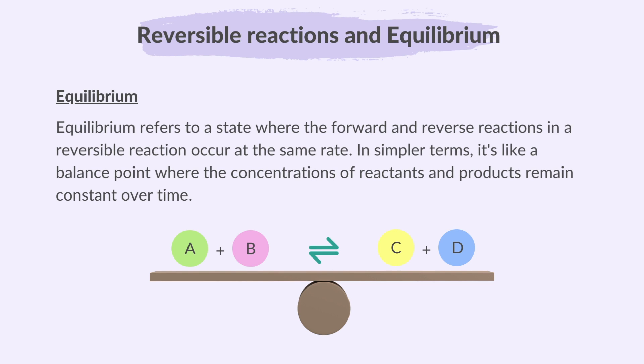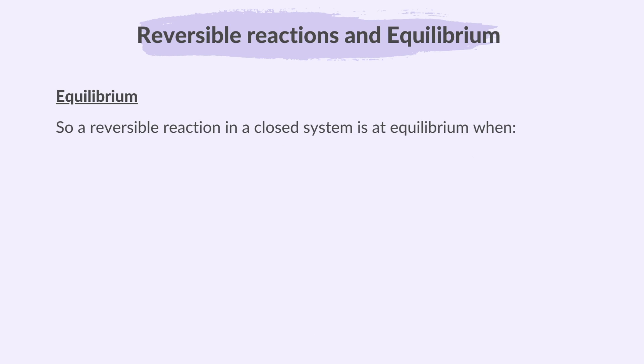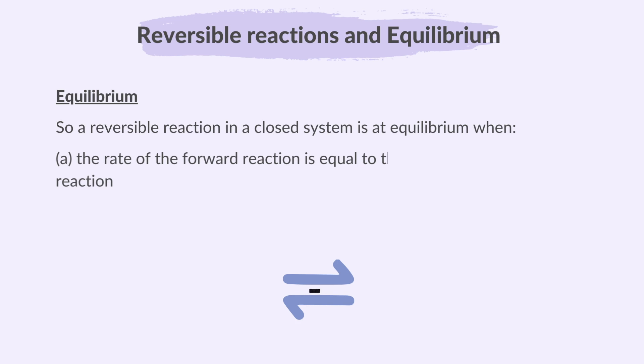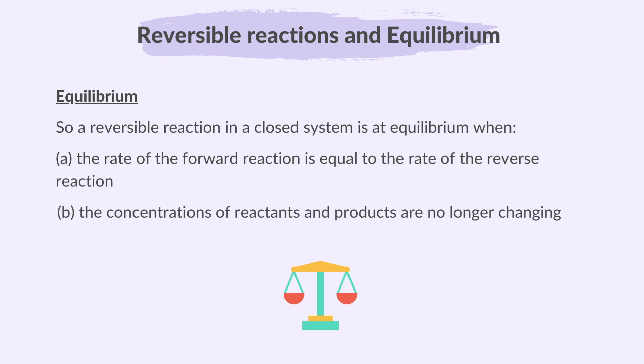Equilibrium refers to a state where the forward and reverse reactions in a reversible reaction occur at the same rate. In simpler terms, it's like a balance point where the concentrations of reactants and products remain constant over time. A reversible reaction is at equilibrium when the rate of the forward reaction equals the rate of the reverse reaction, and the concentrations of reactants and products are no longer changing.